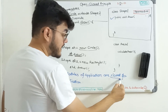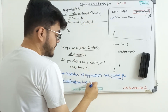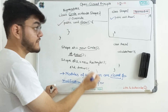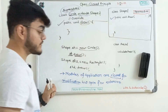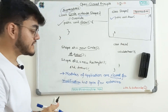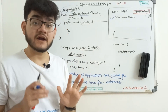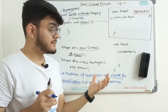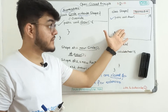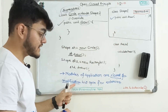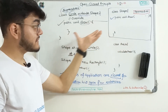Modules of the application are closed for modification, but there is also the open part. The open-close principle says it is open for extension — that's the second approach. In simple terms: the functions inside a class are closed for modification, we are not allowed to modify them. But if the client has multiple requirements — draw a circle or a rectangle — the answer is that it is open for extension. We can extend a new subclass and implement the behavior there.